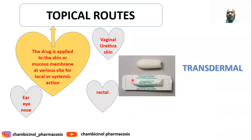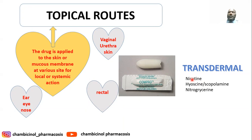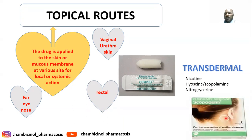In case of the rectal route, the suppository dosage form can be taken rectally. The transdermal route of drug administration is a form of topical application to achieve systemic effect. It includes highly lipid-soluble drugs applied with special patches — for example, nicotine patches used for cigarette smoking cessation, and hyoscine (scopolamine), an anti-emetic used for motion sickness applied below the posterior region of the eye.